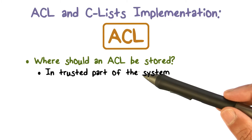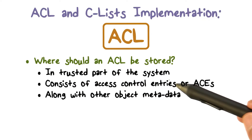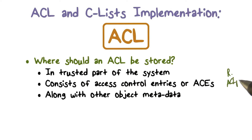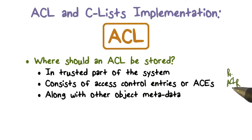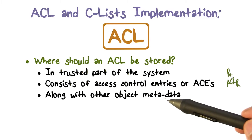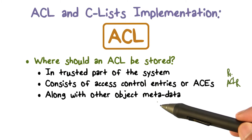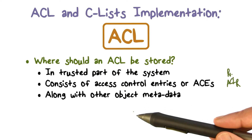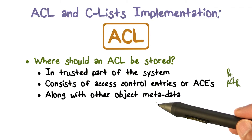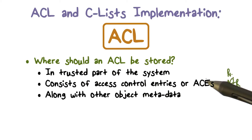But where exactly does it go in that system? We know that it is a list of access control entries for a given object or resource. An ACL exists for each resource, so resource R will have an ACL R. One natural place to store this ACL is where other information about the resource is stored — what we call metadata. For a file, metadata might include the size of the file, where on disk it is stored, who the owner is, and things like that. We can store the ACL along with that other metadata.